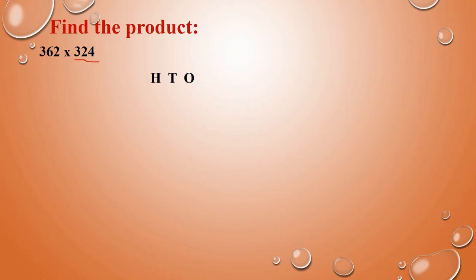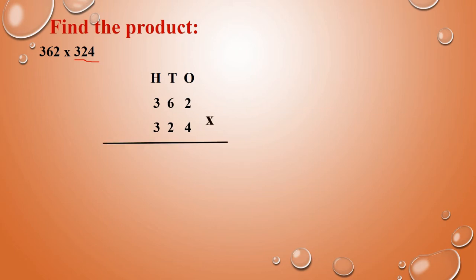Here they have given a 3-digit number. So how do we multiply? First of all, we have to write in columns — place values — then 362, then 324. In these two numbers we are going to multiply. Just like how we multiply by a 2-digit number, same way with this also.